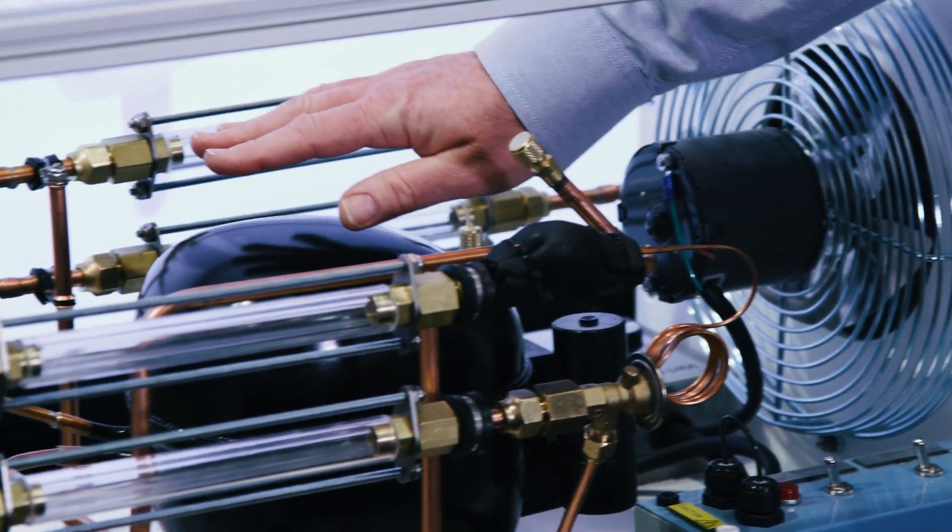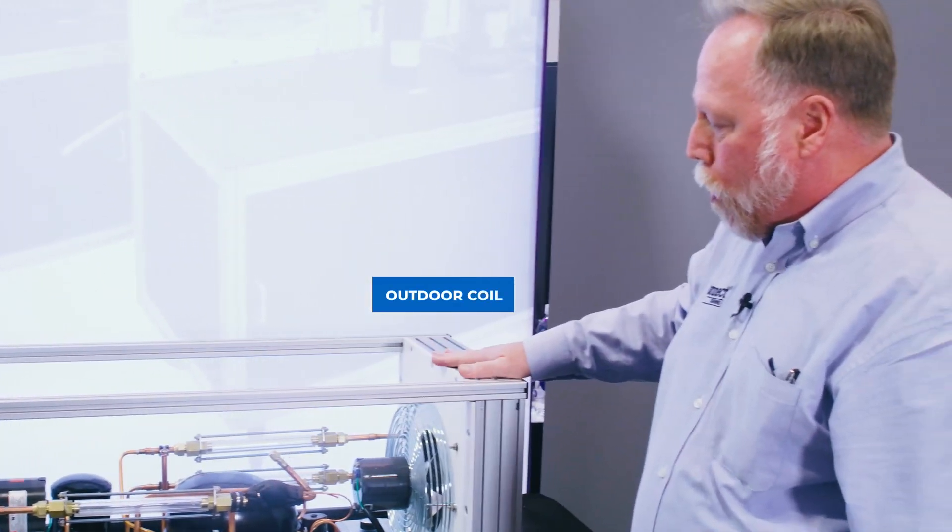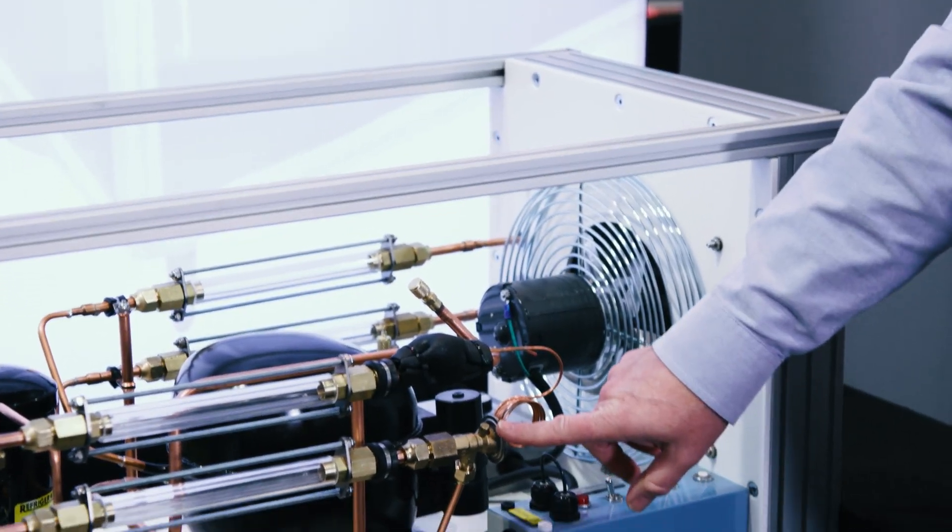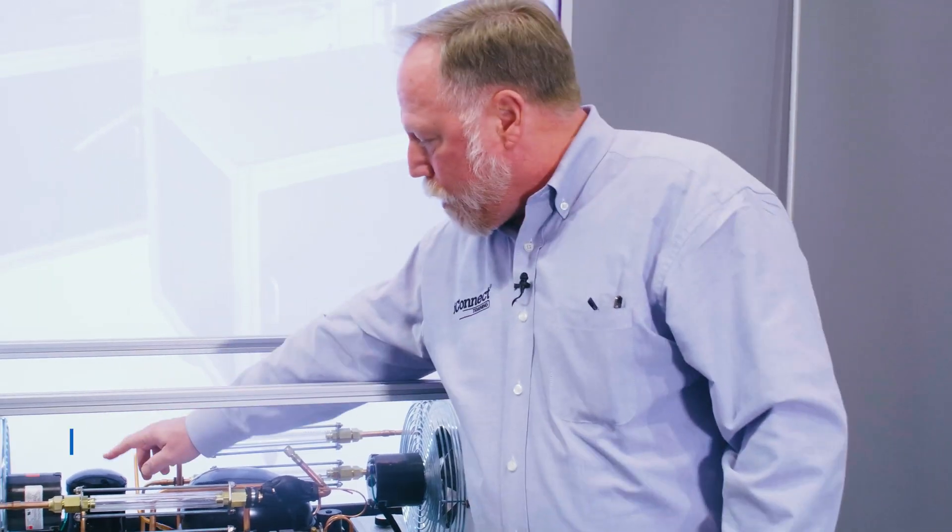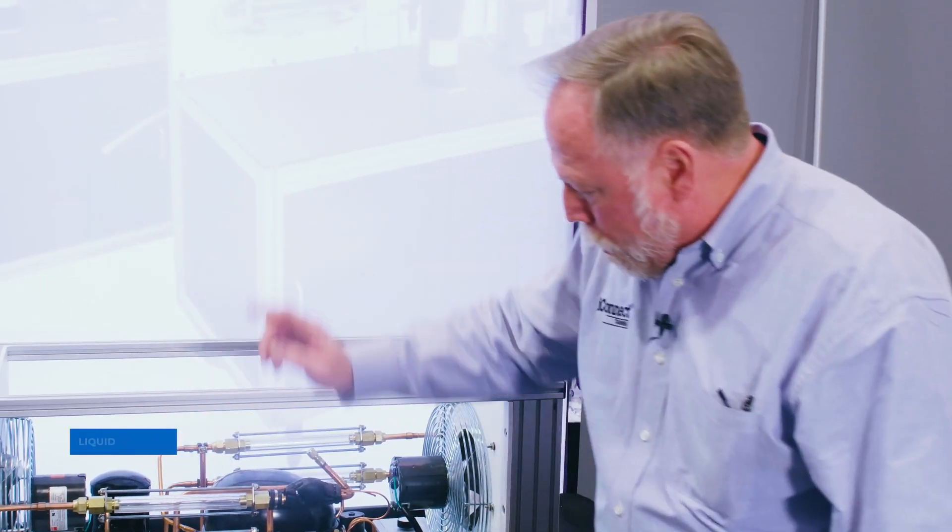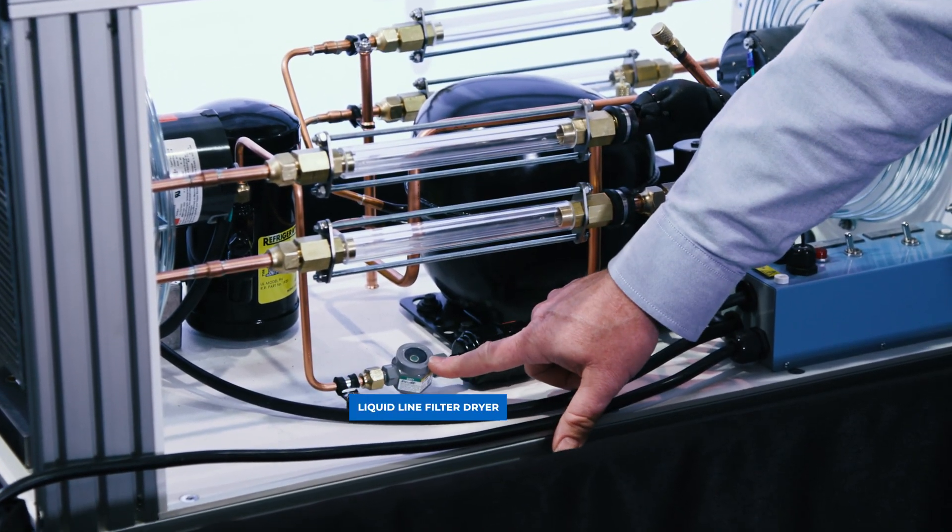Now we've got major components, we've got our compressor, we've got our indoor coil, we've got our outdoor coil, we've got our metering device which is an expansion valve, but then also we've got in here a liquid receiver, we've got a liquid line filter dryer, and we've got a sight glass.